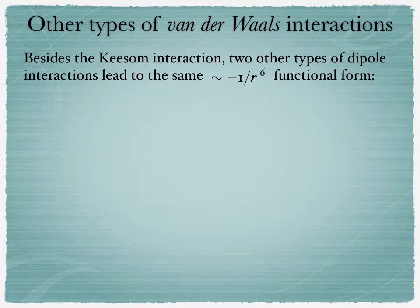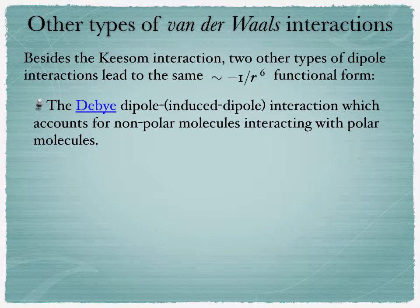Now besides the Keesom interaction it turns out that there are two other types of dipole interaction which give rise to the same minus one over r to the 6th functional form. And because of that these types are all called van der Waals-type interaction. The first one is a Debye-induced dipole interaction, which accounts for non-polar molecules interacting with polar molecules. These polar molecules will induce a dipole into non-polar molecules and then they will interact in the way I've described before.